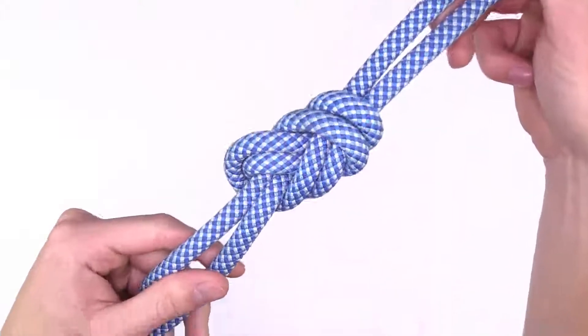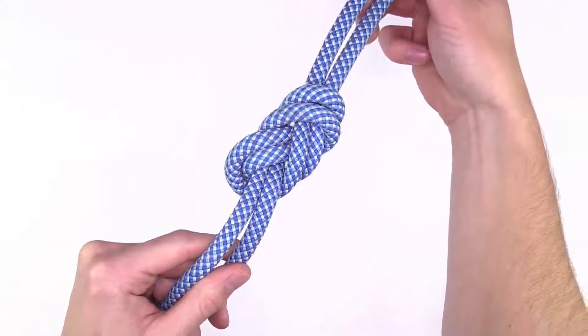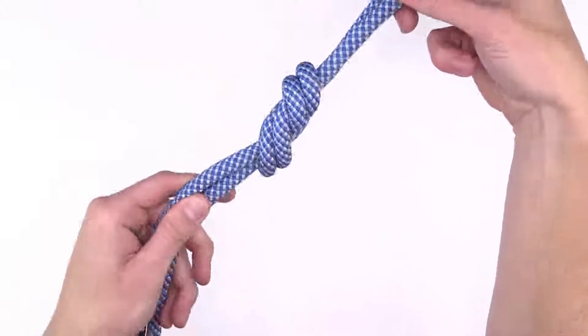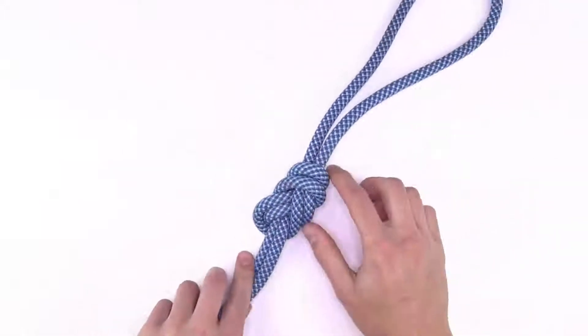The figure eight knot is the most widely used tie-in knot by rock climbers. It's strong, secure, and easy to visually inspect.